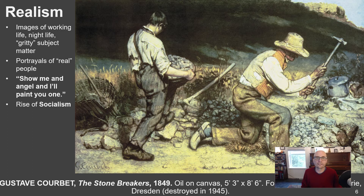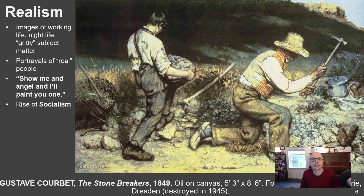Very famously, Courbet was asked, 'Why don't you paint angels?' — meaning, why don't you do biblical scenes, historical scenes, or mythology? And Courbet just looked at the questioner and said: 'If you show me an angel, I will paint you one. But as of right now I don't see any angels. What I see are people working hard and getting paid very little. What I see are people struggling, not making ends meet, living in horrible conditions and poverty, and wearing rags for clothes.'